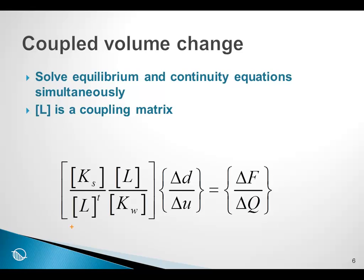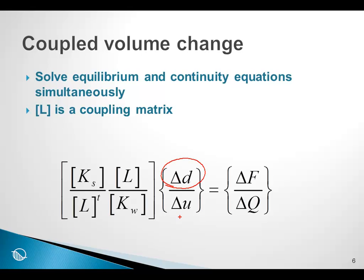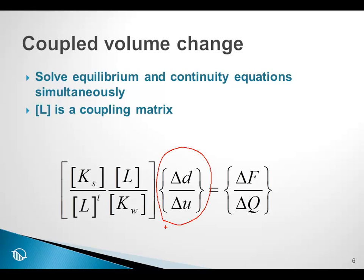In order to solve both equations simultaneously, we need a coupling matrix which we call L. We won't go into the details of its formulation here. If we specify an external load, we compute both displacement and pore pressure. If we specify some flow on the boundary, we also compute displacement and change in pore pressure. If we specify some displacement, we compute a change in pore pressure. By coupling the two equations, we solve for two primary unknowns: displacement and change in pore pressure.